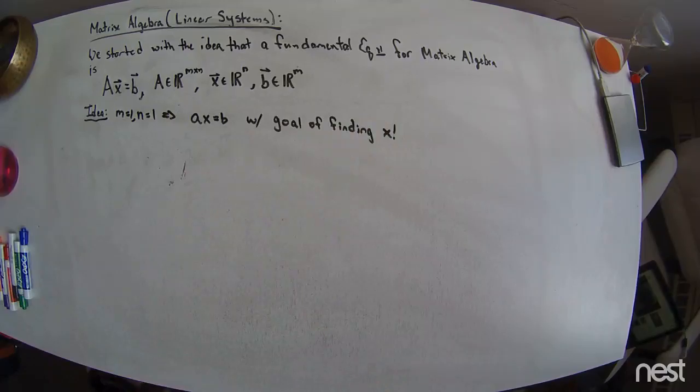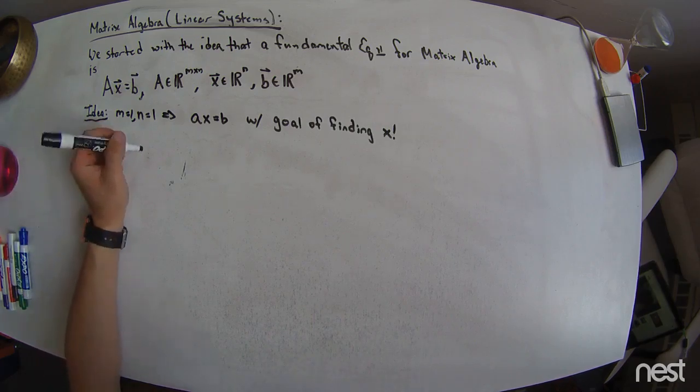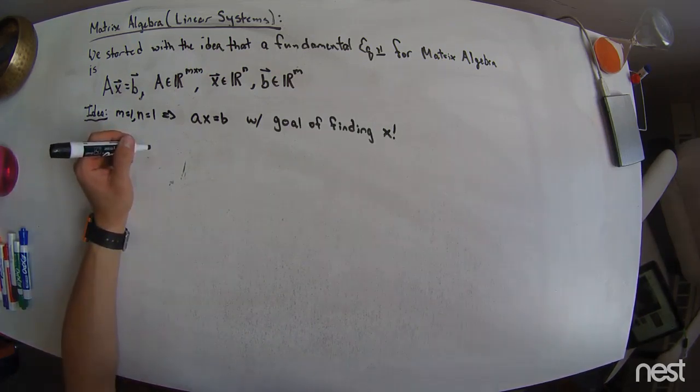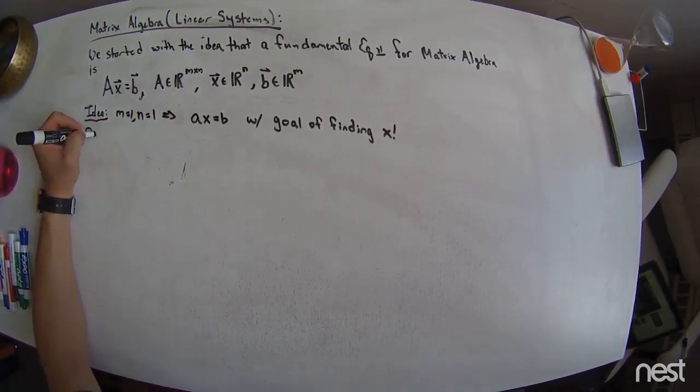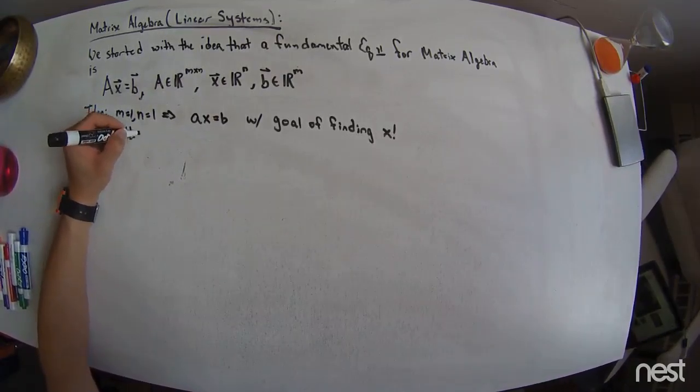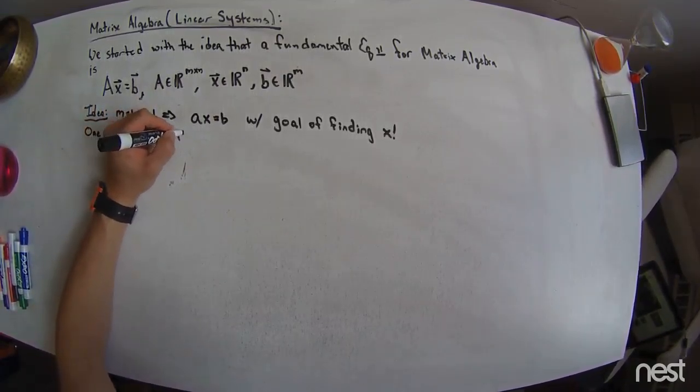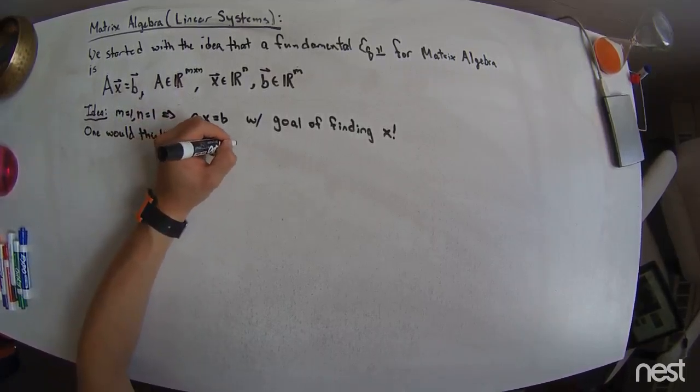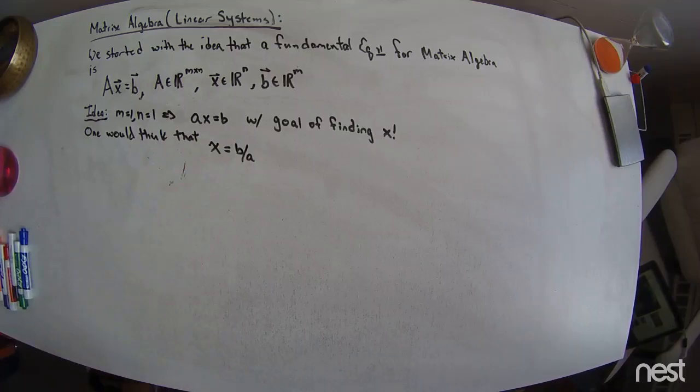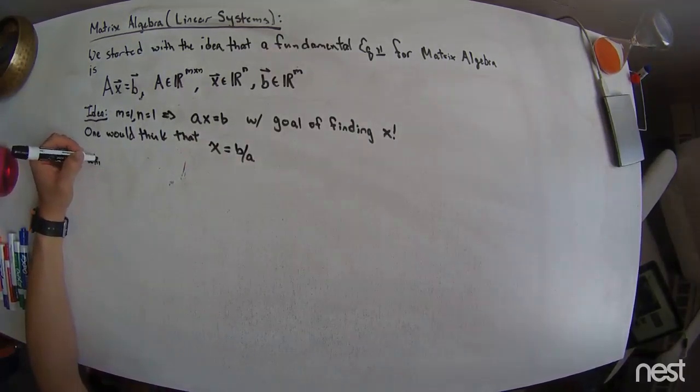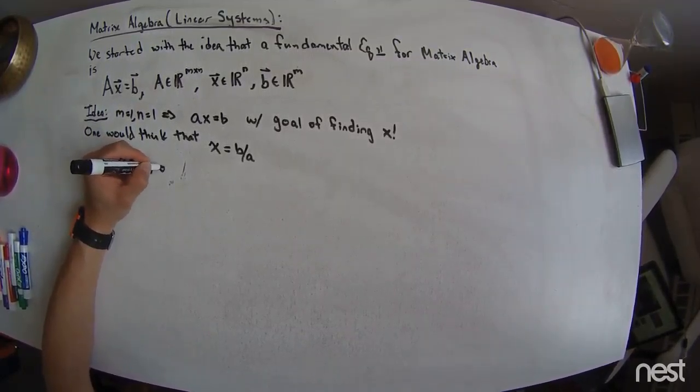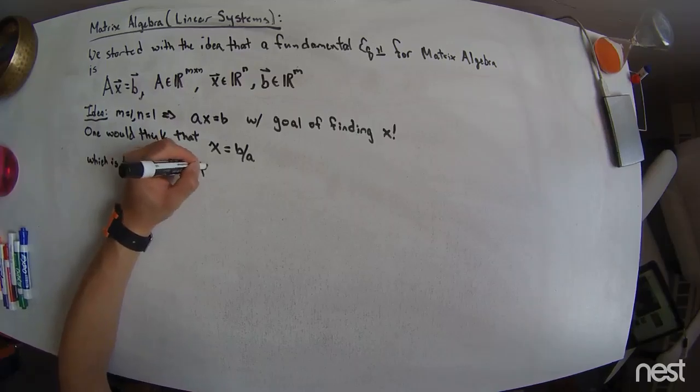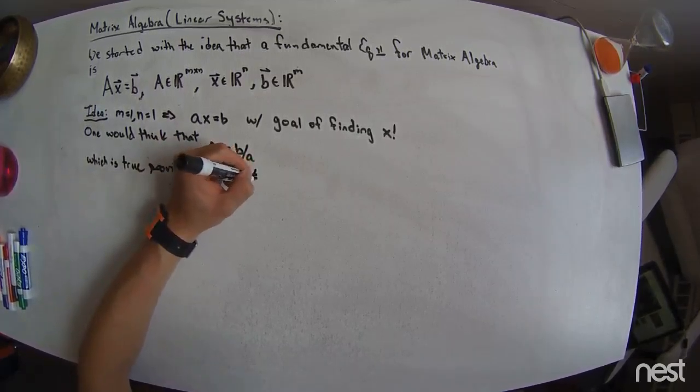And then the goal is to find x. All right, this is all just scalar math now, stuff we've been doing for practically our whole lives. And so, one would think that x equals b over a, which is true, provided that a is not equal to 0.